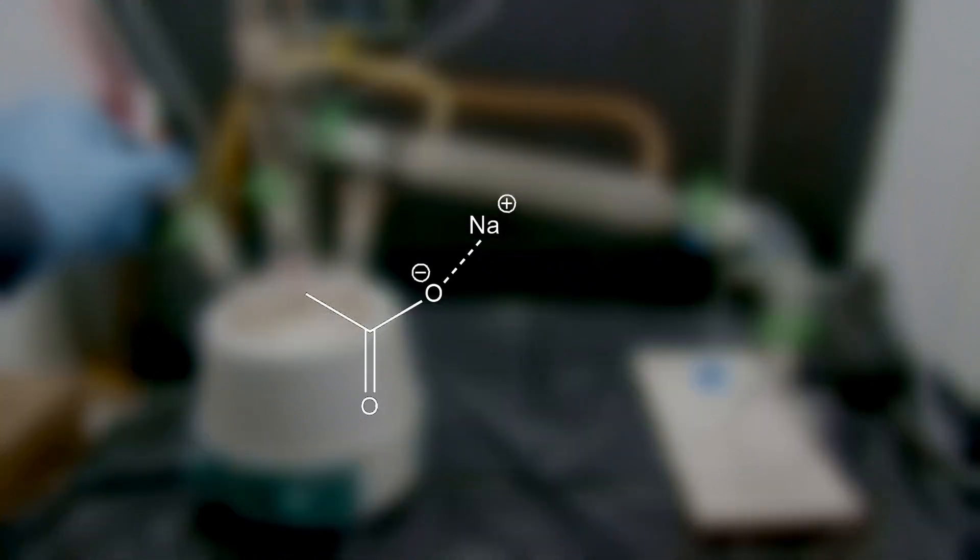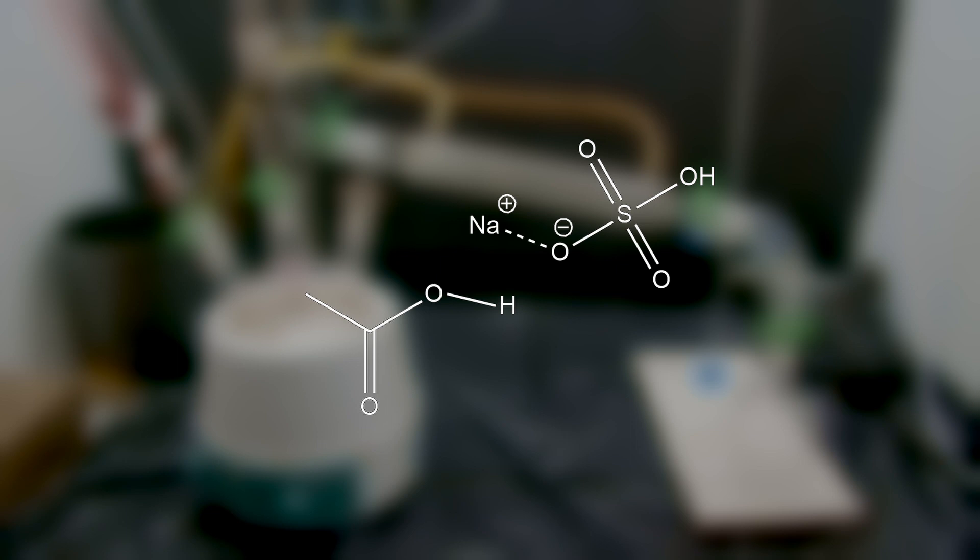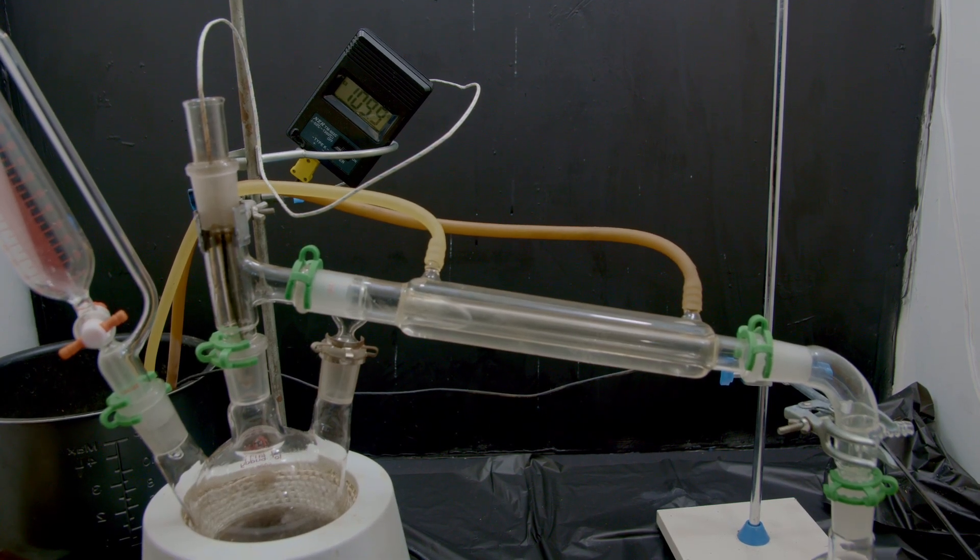So what's happening here is similar to what happened before, but this time the sulfuric acid is a more powerful acid so it trades the sodium acetate its hydrogen to give us back our acetic acid. Because this acetic acid has a really low boiling point, as it's formed we're boiling it off and collecting it on the other side.